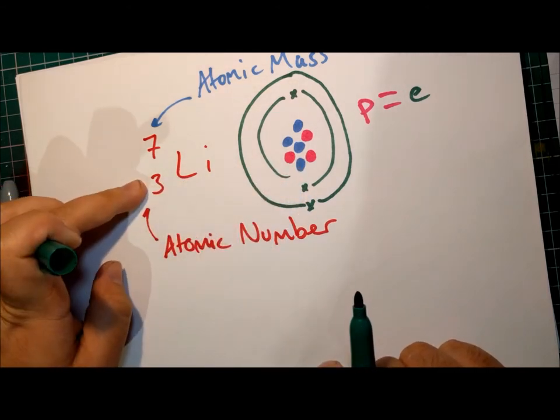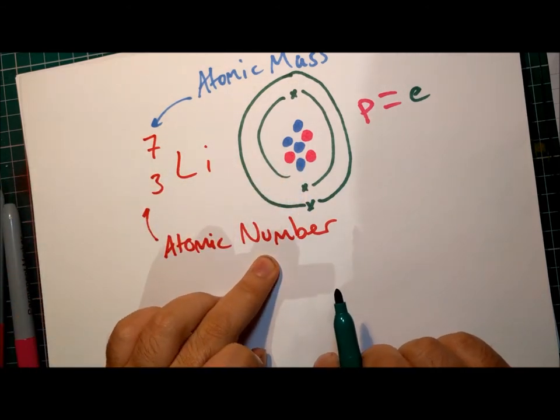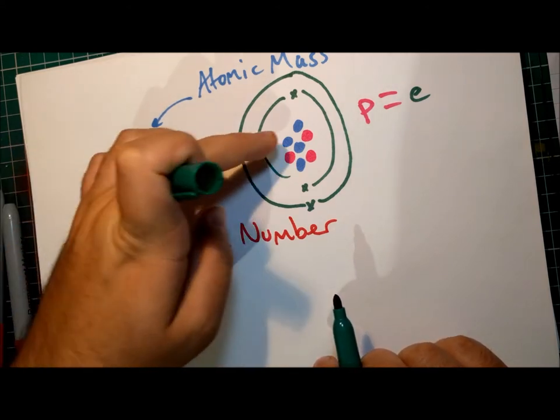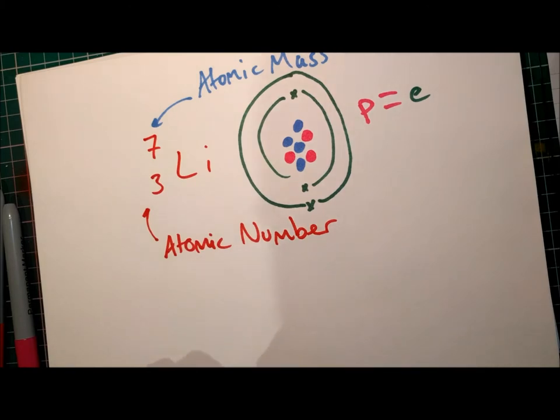So 3 protons, 3 electrons because it's an atom and it's electrically neutral. No overall charge. Must be 3 protons because it has an atomic number of 3, has a mass of 7, so the difference in number must be the number of neutrons, and there are 4 neutrons there.